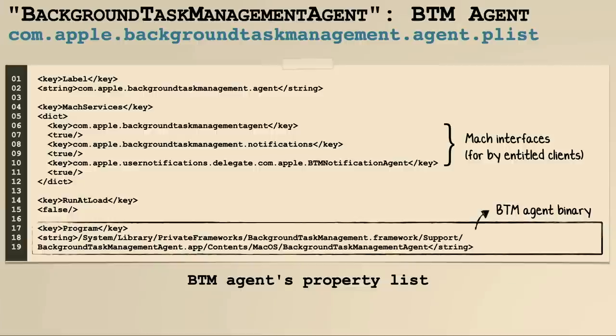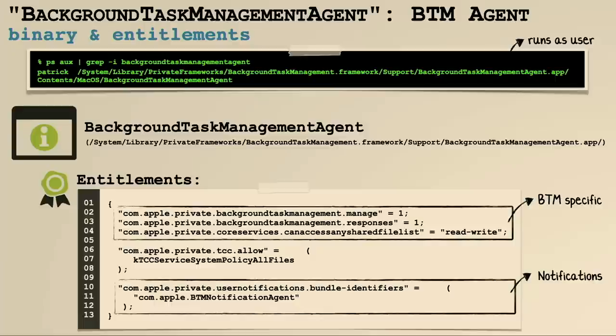Let's briefly look at this agent — the last piece of the BTM puzzle. Its property list shows Mach and XPC interfaces exposed so processes such as the BTM daemon can send a message to it. If we look at its binary, it's running not as root but as the user. This makes sense because the agent is responsible for displaying the notification on the user's desktop, and you have to be running in the user's session to do that. Its entitlements include various BTM-specific entitlements and a private Apple entitlement allowing it to generate system notifications — on macOS you need these entitlements to show a system prompt.